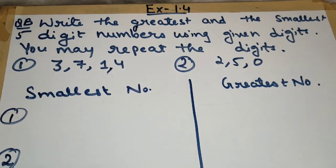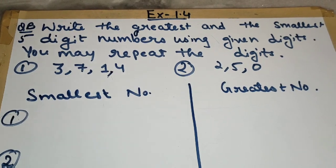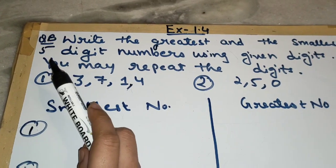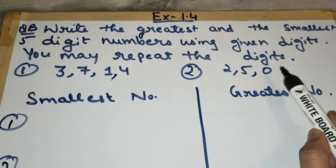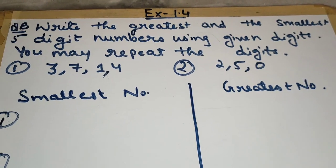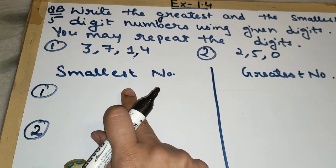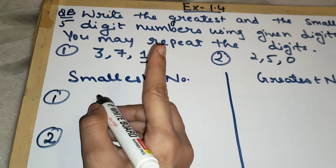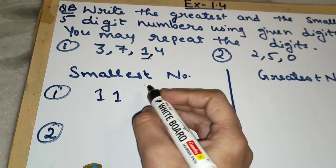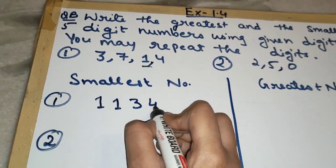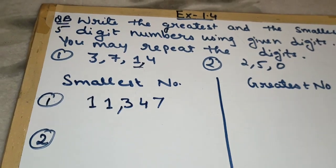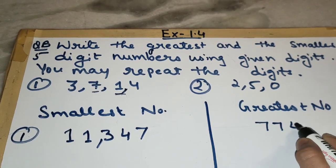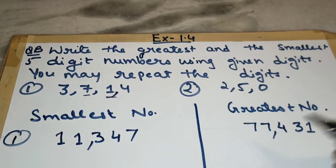The last topic of today: write the greatest and smallest five-digit number using given digits — you may repeat the digit. Here we have four digits: 3, 7, 1, and 4, but we need to make a five-digit number so we need one more digit. For the smallest number, we repeat the smallest digit, which is 1. So we write 1, 1, then 3, 4, 7 — this is the smallest number. For the greatest number, we repeat the greatest digit 7, so we write 7, 7, 4, 3, 1. Put the comma — we got the greatest number.